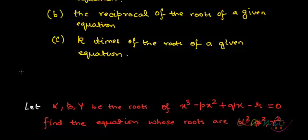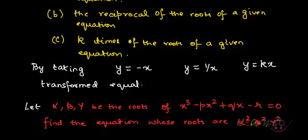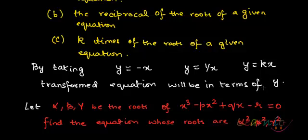This transformation is carried out by taking a new variable — say y, which equals minus x, or y which equals 1/x, or y equals kx — because that is what is given to us in these three conditions. The transformed equation will be in terms of y. We are transforming the equation from x to y given a certain condition.